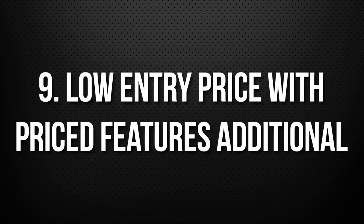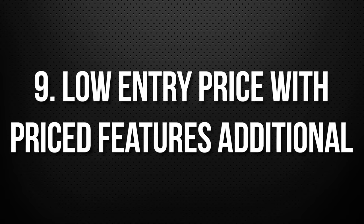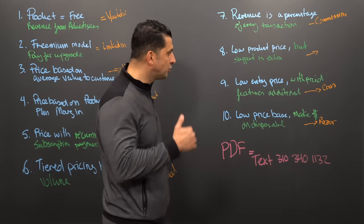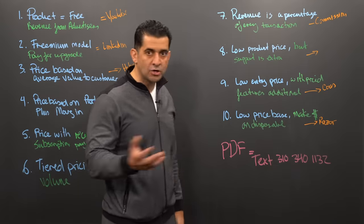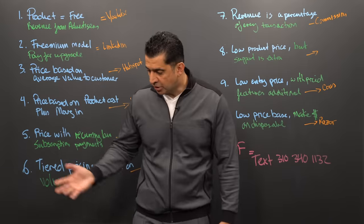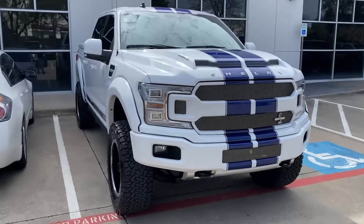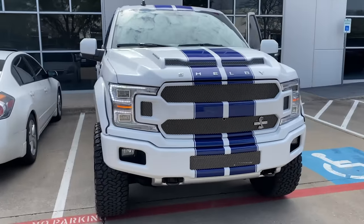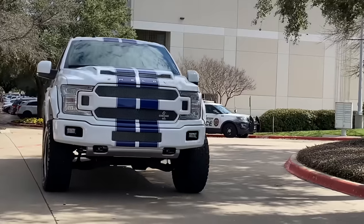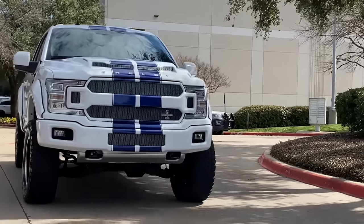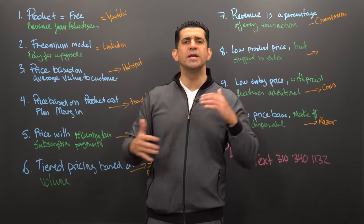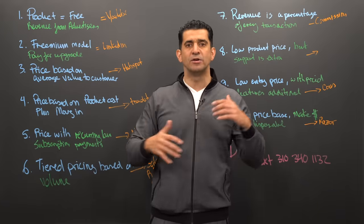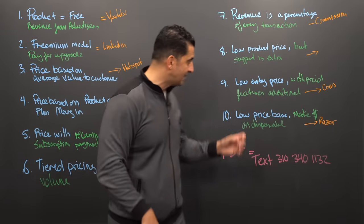Number nine is low entry price with additional priced features. For example, when you're buying a car — I just bought a car and it's being delivered right now — but if you want to add this, and if you want to add that, it's all the additional add-ons that you have.